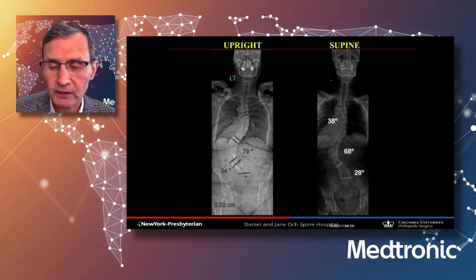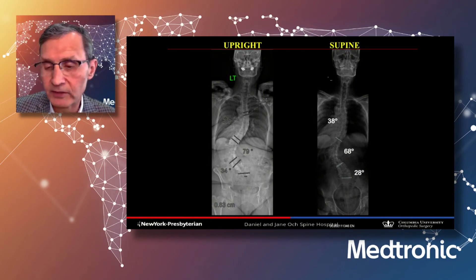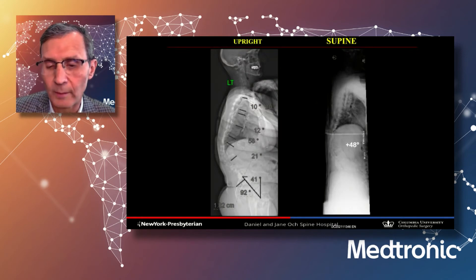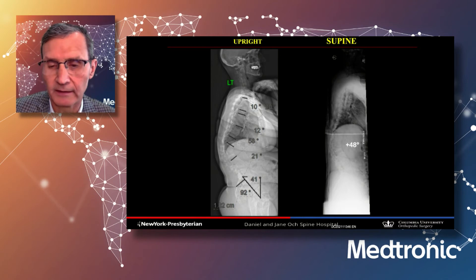On supine coronal imaging, the thoracic curve is structural at 38 degrees, the lumbar curve bends to only 68 degrees, and the lumbosacral fractional curve is structural at 28 degrees — all requiring coronal correction. In the sagittal plane, the thoracolumbar kyphosis remains rigid and relevant at 48 degrees from T10 to L2, even on supine imaging.